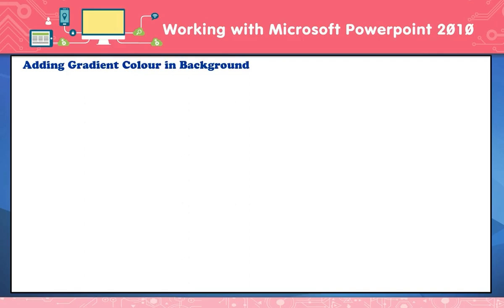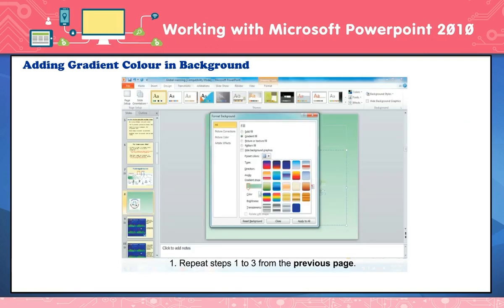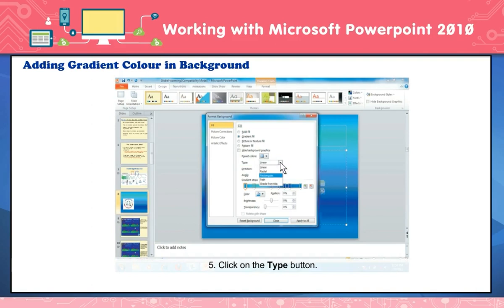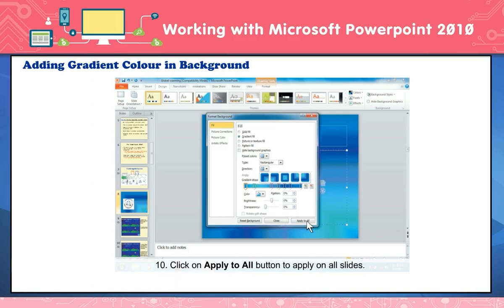Adding gradient color to the background. To add gradient color: repeat steps 1 to 3 from the previous section. The Format Background dialog box appears. Click on Gradient Fill. Click on Preset Colors — a gradient pattern will appear. Click on the pattern you want to apply to the background. Click on the Type button and select the gradient pattern. Click on Direction and select any direction for the gradient pattern. Click Close to apply to the current slide, or click Apply to All to apply to all slides. The gradient color is now applied to the presentation.